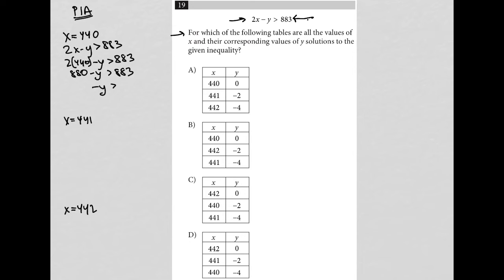When I subtract 880 from both sides and then divide both sides by negative 1, I get y is less than negative 3. Okay, so now let me check. Where do I have my y values that go along with 440 as being less than negative 3?